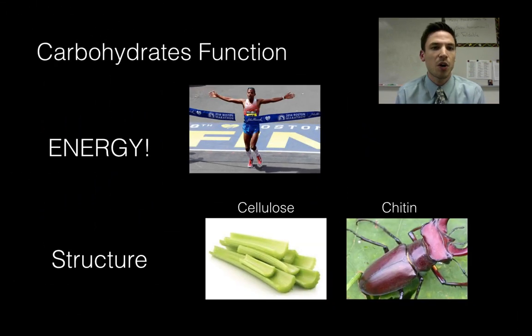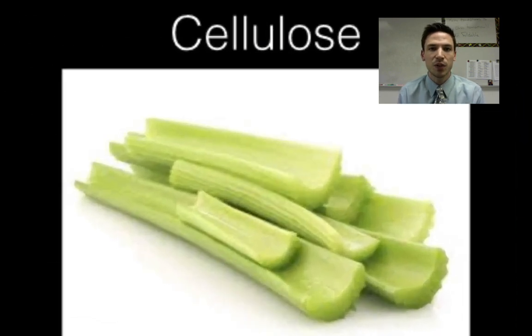A less known thing that carbohydrates do though is for structural purposes. So here is a picture of celery. If you've ever eaten celery you notice that it crunches. They're using carbohydrates, in this case a carbohydrate called cellulose for structural purposes, it's going to give it its rigidity and strength.